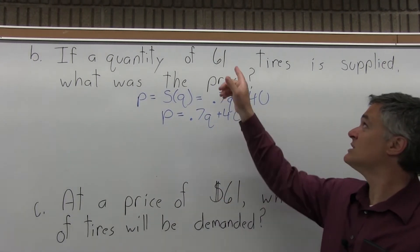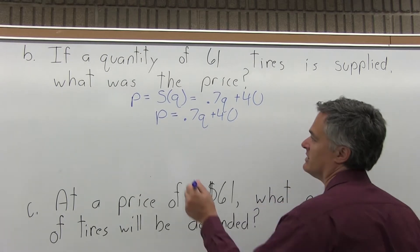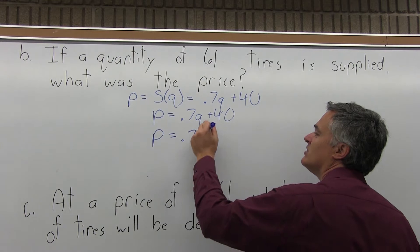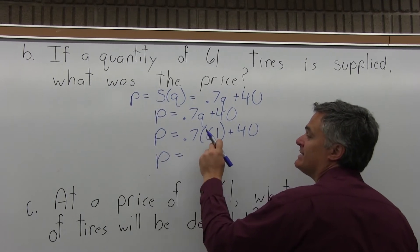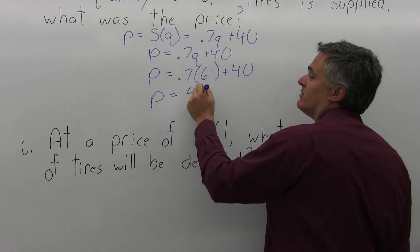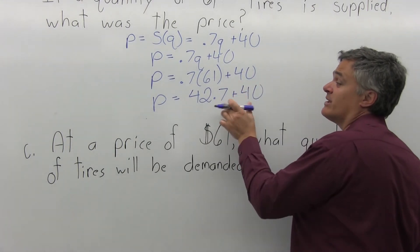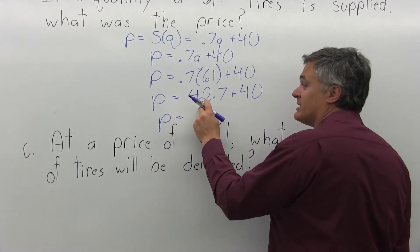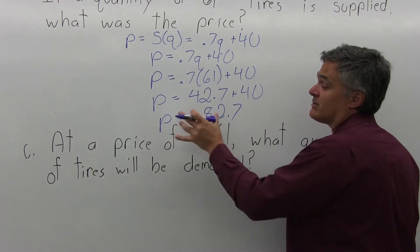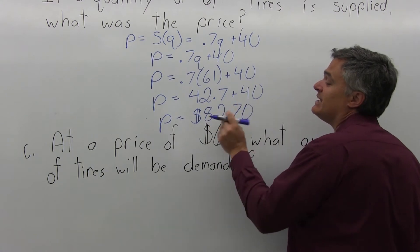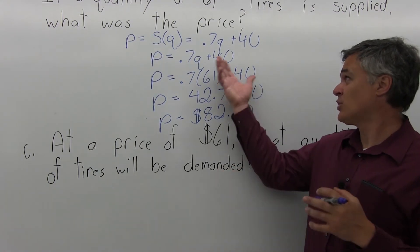The information given — 61 tires — is a quantity, so the 61 goes in for Q, and I solve for P. P equals 0.7 times 61 plus 40. Multiplying 0.7 times 61 gives 42.7 — you might need your calculator for that. Then adding 40: 42.7 plus 40 equals 82.7. Because P is for price, that 82.7 means $82.70. The price per tire is $82.70 if the quantity supplied was 61.